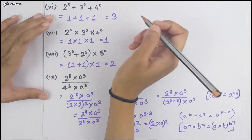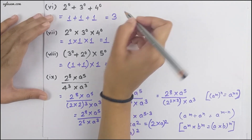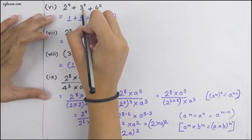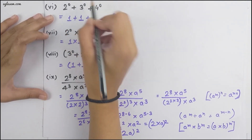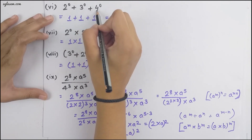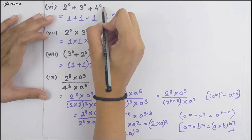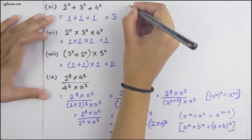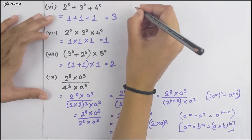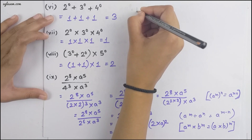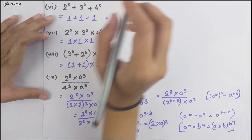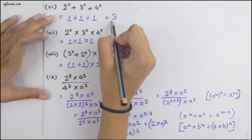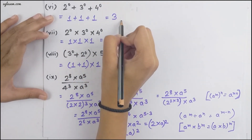Moving to the sixth part: 2⁰ + 3⁰ + 4⁰. Any number whose power is 0 equals 1, so we have 1 + 1 + 1 = 3.